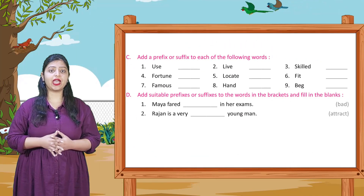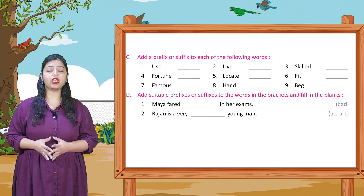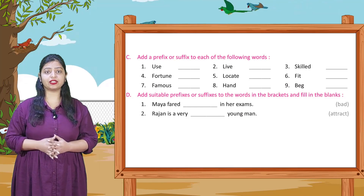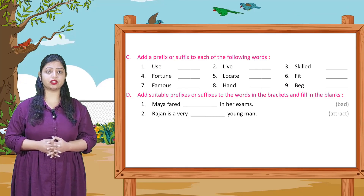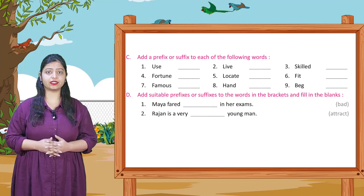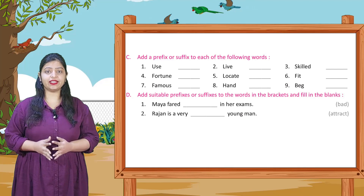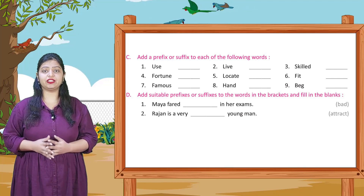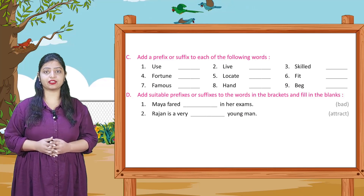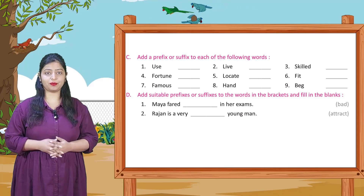Section C: Add a prefix or suffix to each of the following words. Yahan par jo neeche words diye gaye hain unme prefix ya suffix dono mein se kuch bhi lag sakta hai — aapko decide karke sahi likhna hai. Pehla: use + less = useless, live + ly = lively, skilled → unskilled (prefix add karke). Isi tarike se baaki aap apne aap karenge.